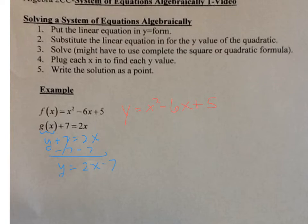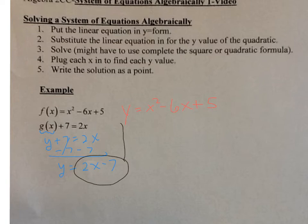Now what you want to do is take your linear equation and plug it into the y value of your quadratic. I'm going to take my linear, because that's equal to y, and substitute it into my y value of my quadratic — they are actually equal to each other. So I have 2x minus 7 is equal to x squared minus 6x plus 5.